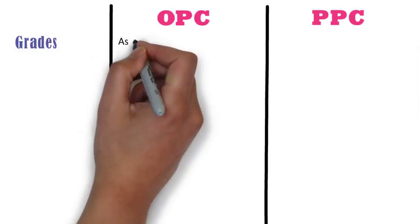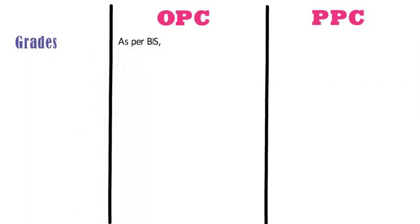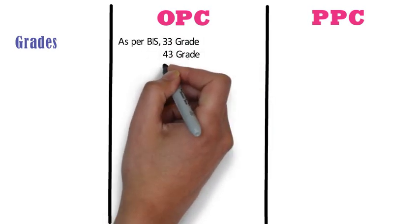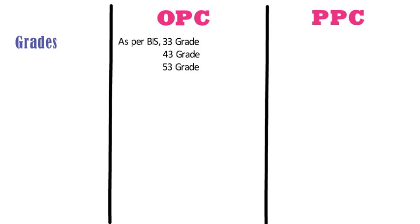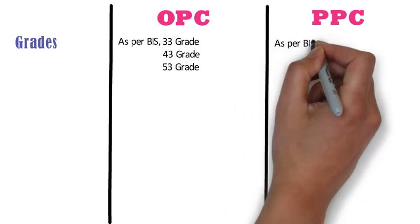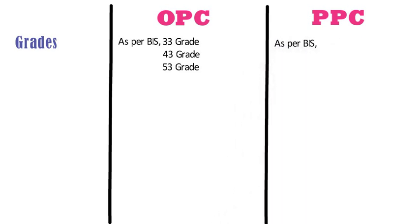Grades. As per the classification of Bureau of Indian Standards, OPC is available in 33-grade, 43-grade, and 53-grade. Whereas as per Bureau of Indian Standards, PPC is available in 1 grade, and its strength matches the strength of 33-grade OPC after curing.